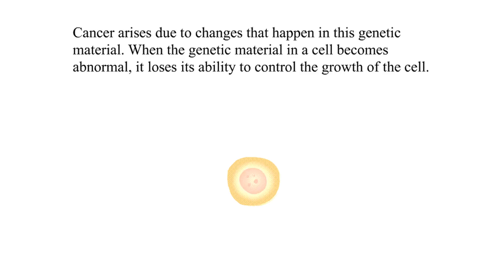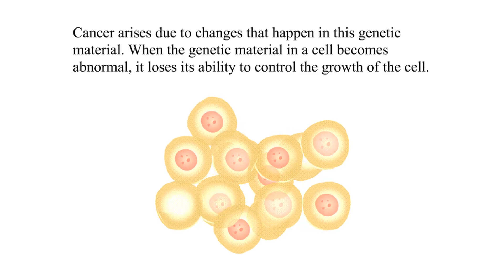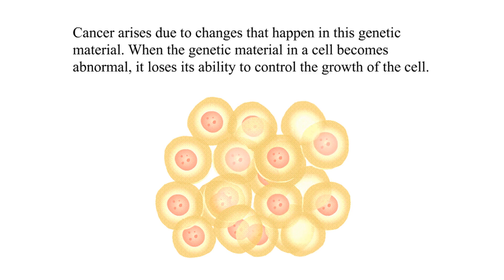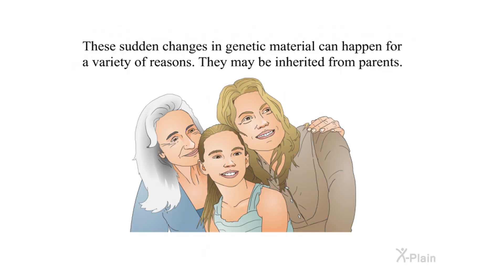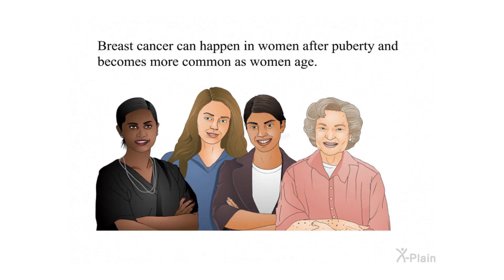Cancer arises due to changes that happen in genetic material. When the genetic material in a cell becomes abnormal, it loses its ability to control the growth of the cell. These sudden changes in genetic material can happen for a variety of reasons. They may be inherited from parents, or changes in the genetic material may also happen due to exposure to specific infections, drugs, tobacco, or other factors.